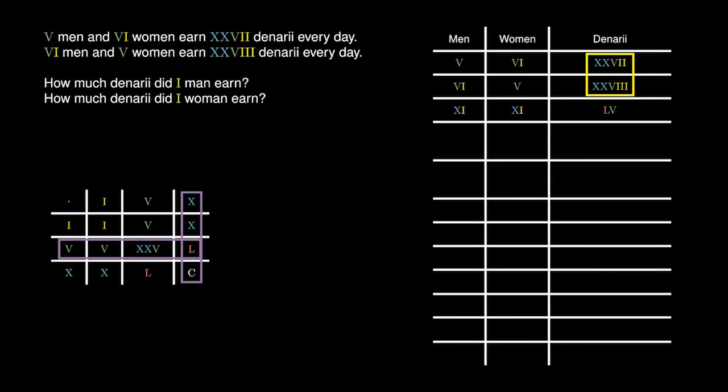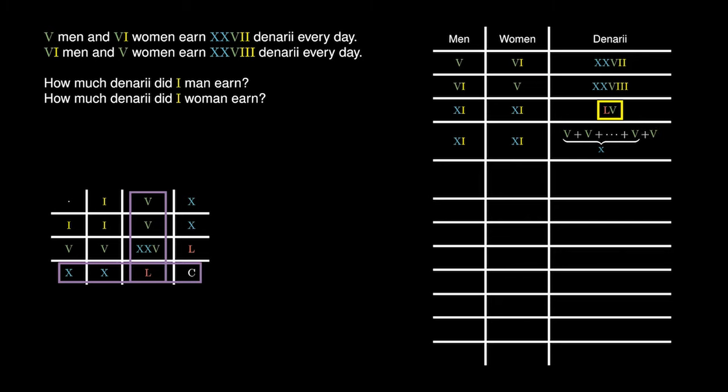On the other hand, it seems a little challenging to work with 55. Looking at our multiplication table once again, we could write 50 as 10 lots of 5. This means we could rewrite 50 as 10 lots of 5 plus 5, which simplifies to 11 lots of 5. Now, since 11 men and 11 women obtain 11 lots of 5, 1 man and 1 woman must obtain 5 denarii.